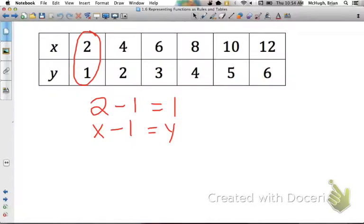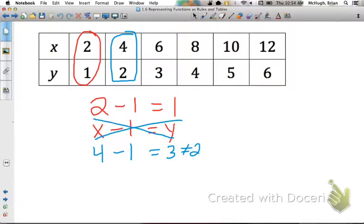So that works with 2. 2 minus 1 is 1, and that's our output. But let's try it with the next set of input and output, and we'll see if we're right. So if I put in 4 for x and I subtract 1, do I get my output? No, because this gets us 3. The output is not 2, so that means this original guess of x minus 1 equals y can't possibly be the rule. It only worked for the first input. So let's try something else.